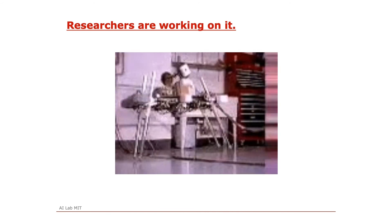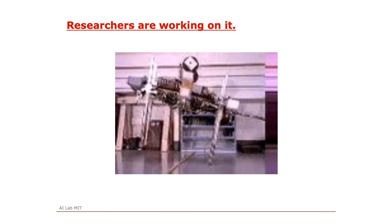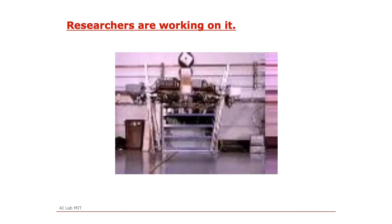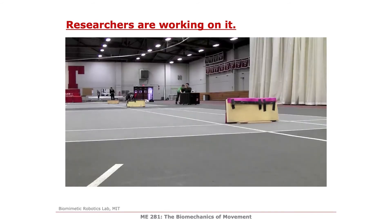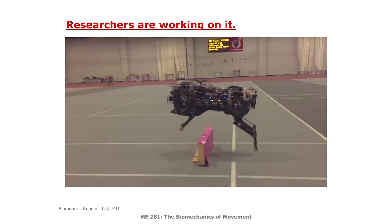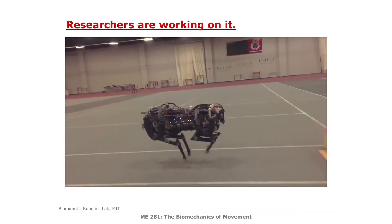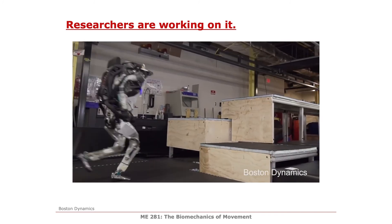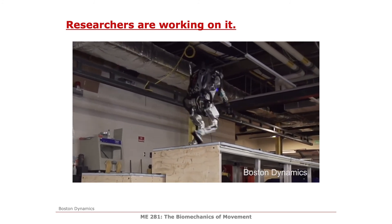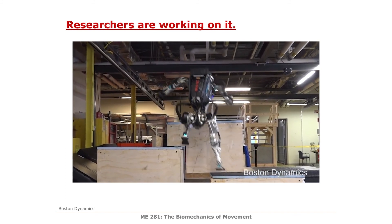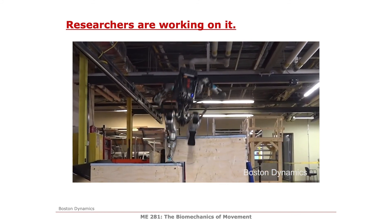Researchers are working on this. This is a legacy machine from the AI lab at MIT, and these early attempts really looked nothing like a horse galloping. More recent efforts, shown here — for example by Sungbae Kim at MIT — have produced amazing galloping robots that can overcome barriers. Spinning out of the leg lab at MIT, Boston Dynamics has also produced robots that are incredibly strong, beginning to use elastic mechanisms, and really showing what biomechanics and robotics can do together.